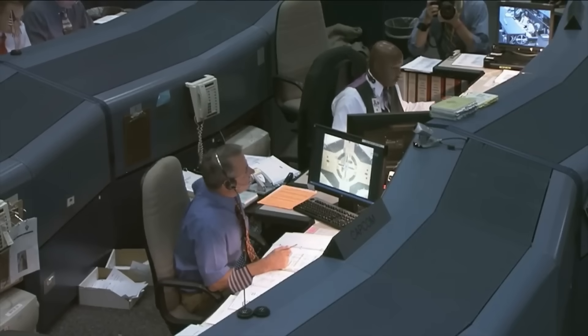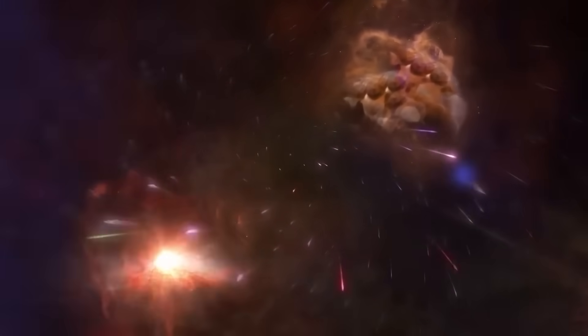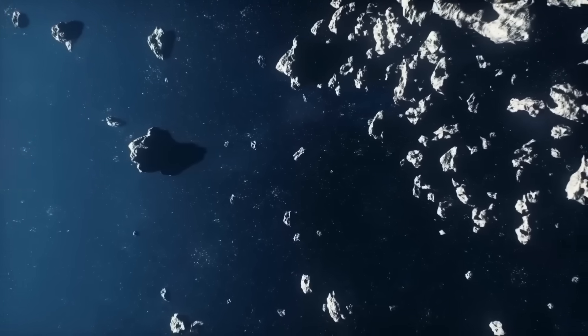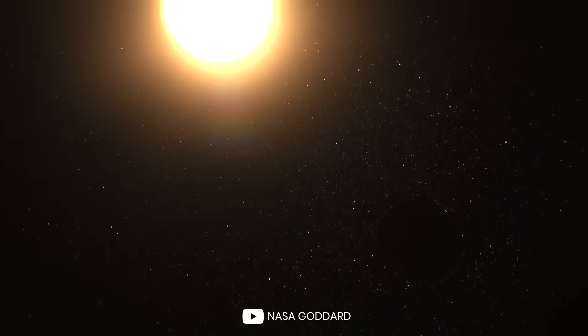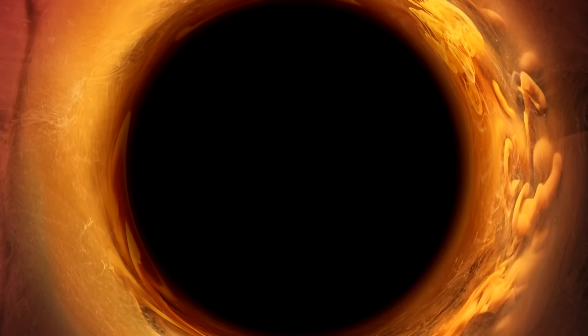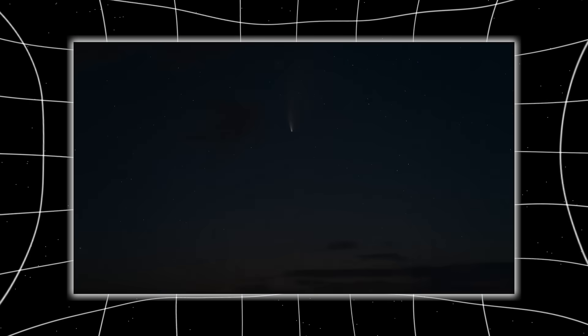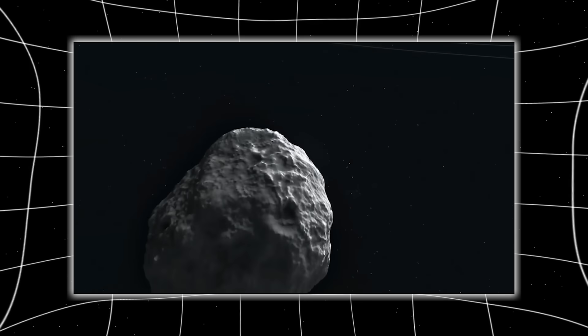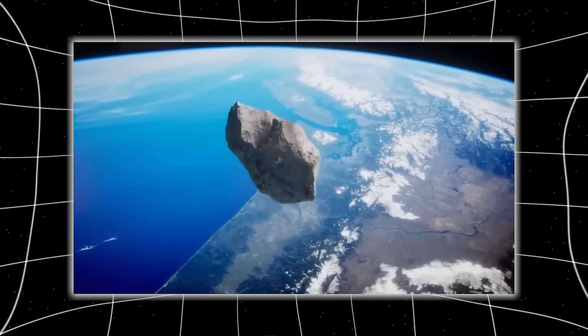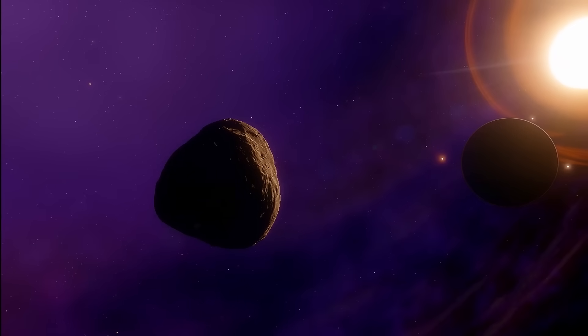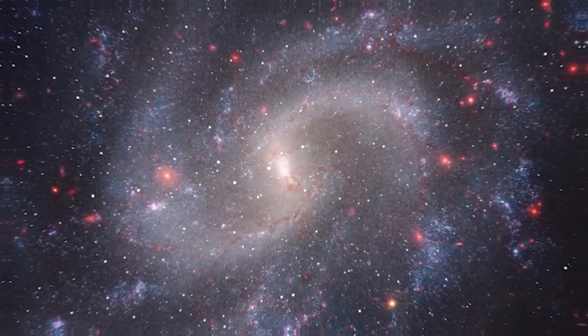As scientists continued to track 3I Atlas, one detail grew harder to dismiss. Its trajectory appeared to be carefully mapped to avoid Earth. When plotted against the orbital paths of the planets, the object's route seemed too perfect, skimming the gravitational fields of Mars and Jupiter, but steering just wide of our planet by millions of miles. At first, this was written off as coincidence, the natural product of a random hyperbolic orbit. But statistical models showed something far stranger. The probability of such a perfect avoidance occurring naturally was vanishingly small. This was not the chaotic wandering of a cometary fragment. It was precision.